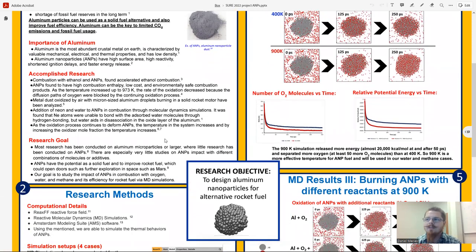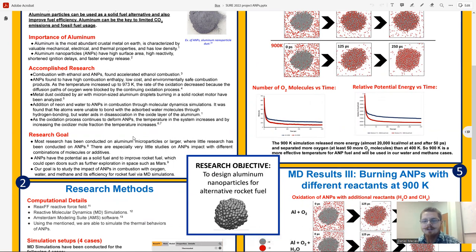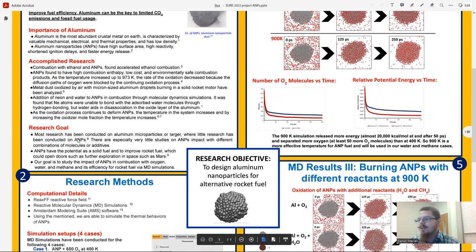Research involving ANPs involved combustion with ethanol, neon, and water. Combustion with ethanol and ANPs was found to accelerate the ethanol combustion. The combustion with neon wasn't very productive, but it was found that water and ANPs can help oxidize the layer of the aluminum. ANPs were also found to cause high combustion enthalpy and very low cost. As the temperature increased up to 973 Kelvin, the rate of oxidation decreased but increased in temperature and production. Metal dust was also tested with micro-sized aluminum droplets in a solid rocket motor. The oxidation process was found to continue to deform ANPs, which cause an increase in temperature in the system. As the oxidizer mole fraction increases, so does the temperature.